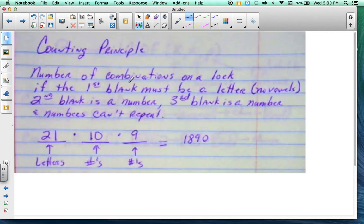Counting principle. For instance, if I have the number of combinations on a log, that's what I want to find, and let's say there's three blanks. The first one must be a letter, no vowels. The second one must be a number. The third one must be a number, but numbers can't repeat. Well, I have 21 letters. That's letters without the vowels. Ten numbers, ten numbers. So drawing a picture also helps. 1,890 is the answer.